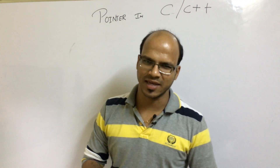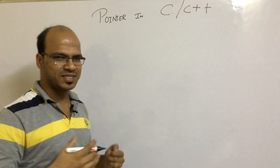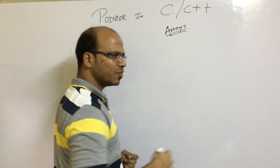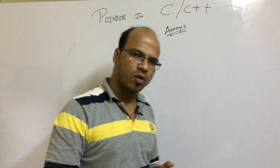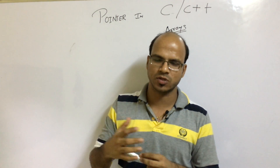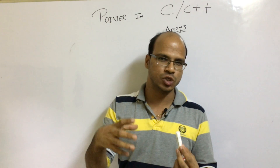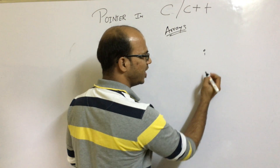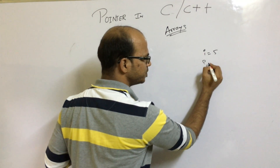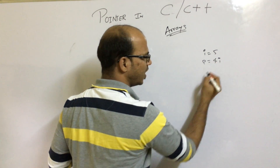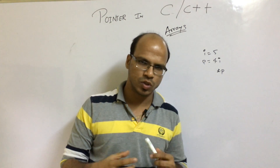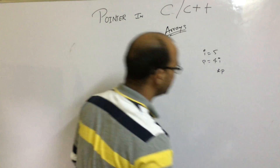Welcome, this is Navin Reddy and in this video we'll talk about pointers in C, but we'll also talk about how to work with arrays using pointers. We've already talked about what a pointer is — it refers to the address or it stores the value of an address. So if we have a variable I with value five, we can save the address of I in a pointer P as ampersand I, and then fetch the value using star P.